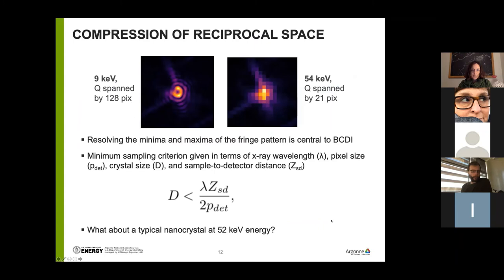What do I mean by compression of reciprocal space? In a simulation example, at a typical 9 keV BCDI pattern, the Q range on the side of the detector is spanned by 128 pixels. If we change the energy to 54 keV and find that same Bragg peak again, the equivalent Q range is now spanned by only 21 pixels. This is effectively like a binning operation — we've coarsened the pixels to the degree that one and a half fringes or so fit into one pixel and the integrated intensity is reported. Resolving the minima and maxima of these fringe patterns is central to BCDI, as oversampling the pattern is one of the key criteria for phase retrieval to work.